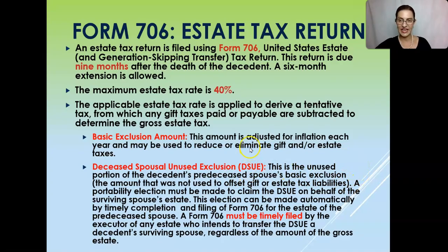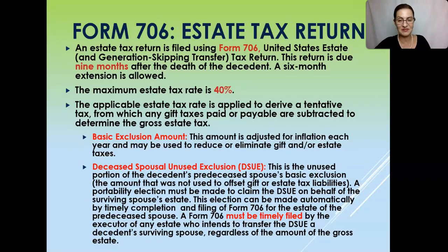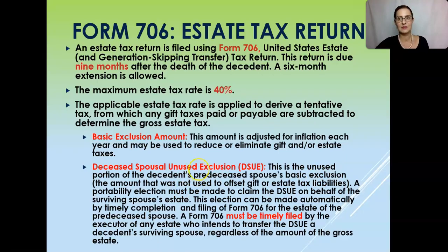Pre-deceased spouse just means the one that died first. We're all going to eventually be deceased, and the one that's pre-deceased of the two spouses is the one that went first. The DSUE is basically the amount of the exclusion that wasn't used up by the spouse that already died.